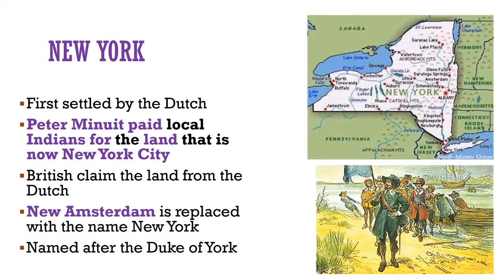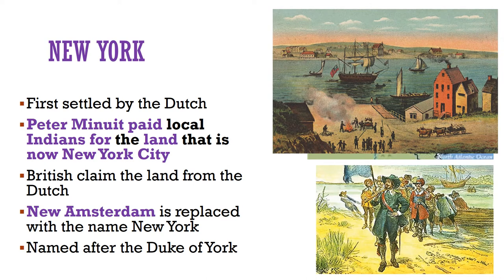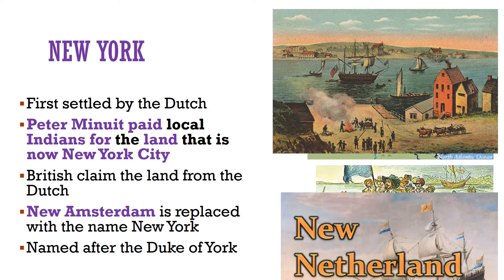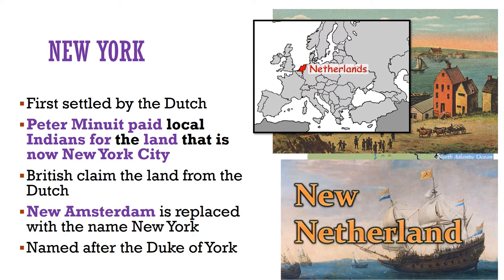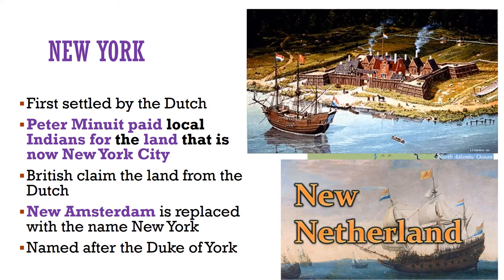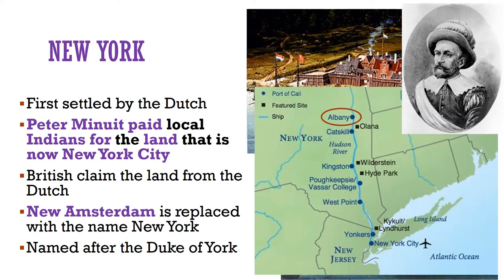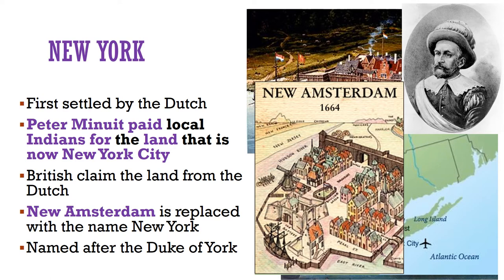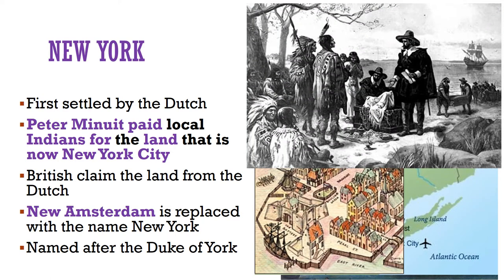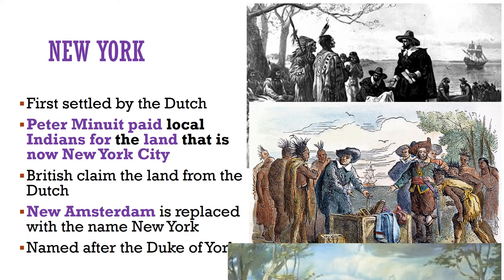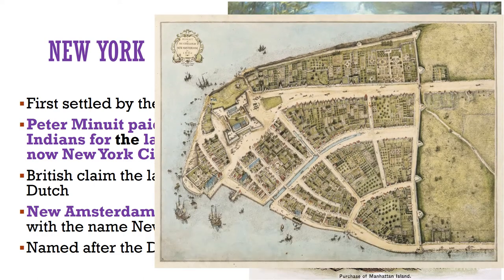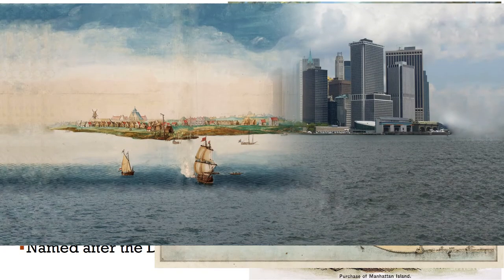Remember the explorer Samuel de Champlain? He explored the land of New York in the early 1600s, and it was first settled by the Dutch — people from the Netherlands — in 1613, who built trading posts along the Hudson River. The Dutch named the colony New Netherland after their home country. During the next ten years, Dutch settlers established small colonies at Albany and other points along the Hudson River. In 1625, a man named Peter Minuit, one of the leaders of the colony, founded New Amsterdam at the outflow of the Hudson River. According to legend, Minuit paid local Indians about $24 worth of trinkets for the land — land that would eventually become America's largest city, New York City.